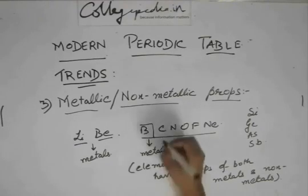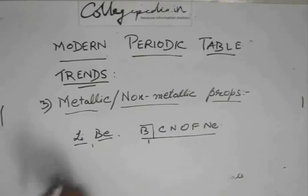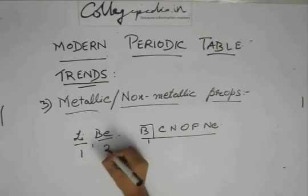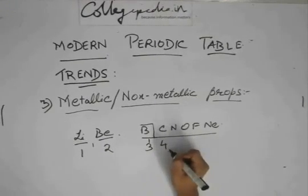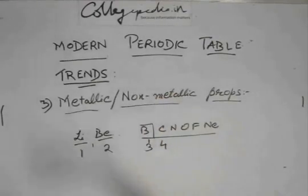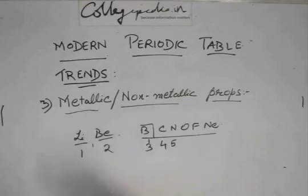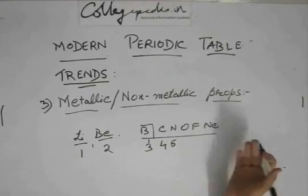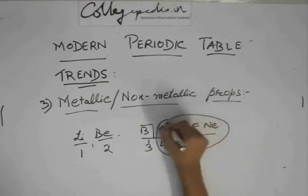After boron in the period there are non-metals. Why? Because lithium and beryllium have one and two electrons respectively in their outermost shells. After three or four electrons in the outermost shell, it becomes easier to accept electrons than to donate them. For example, it's easier for nitrogen to accept three electrons than to give away its five. So on the right side of the periodic table, due to the larger number of electrons in the outermost shell, elements start accepting electrons instead of donating them, and thus they behave like non-metals.